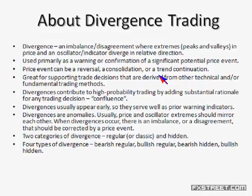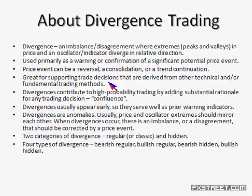When we have a divergence, we're looking for some type of significant price event to occur. This could be a reversal, a consolidation, or a trend continuation, depending on the type of divergence. These divergent signals are great for supporting trade decisions or warning of a potential move in the market — they're used as supporting factors within your trade decisions.